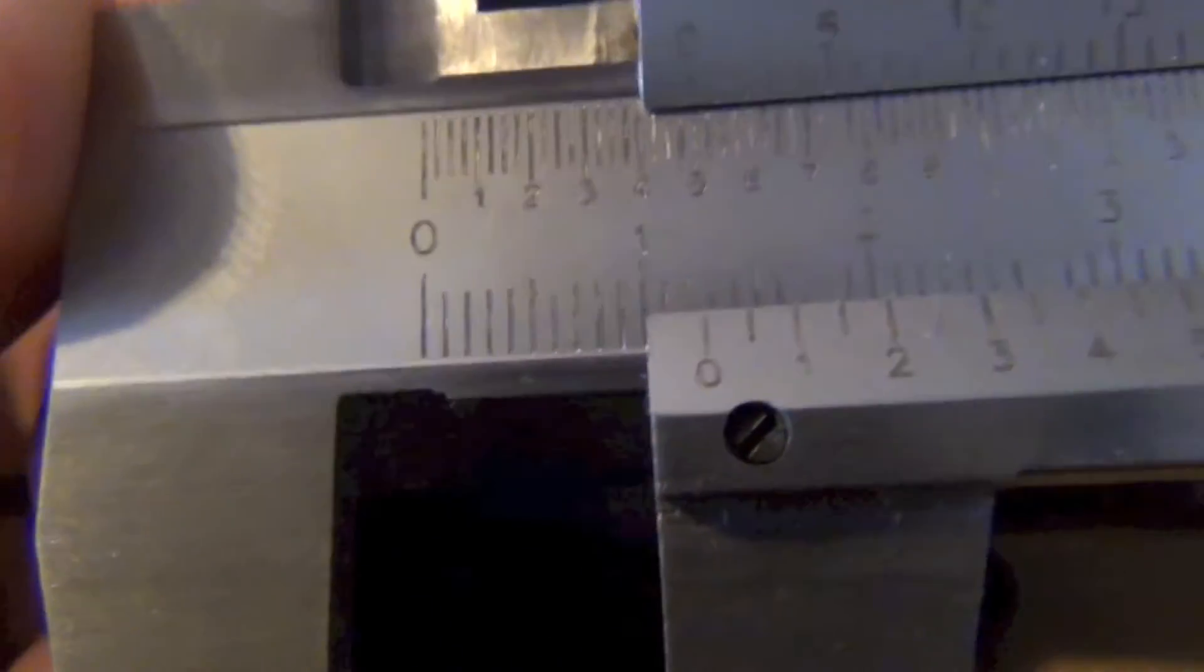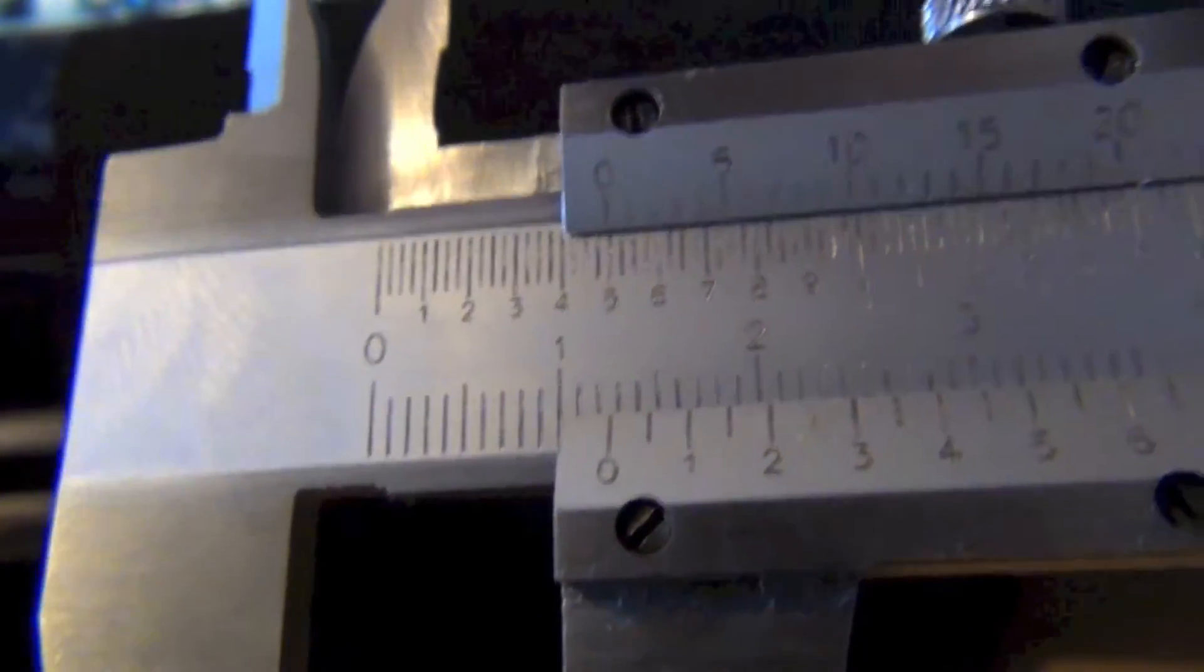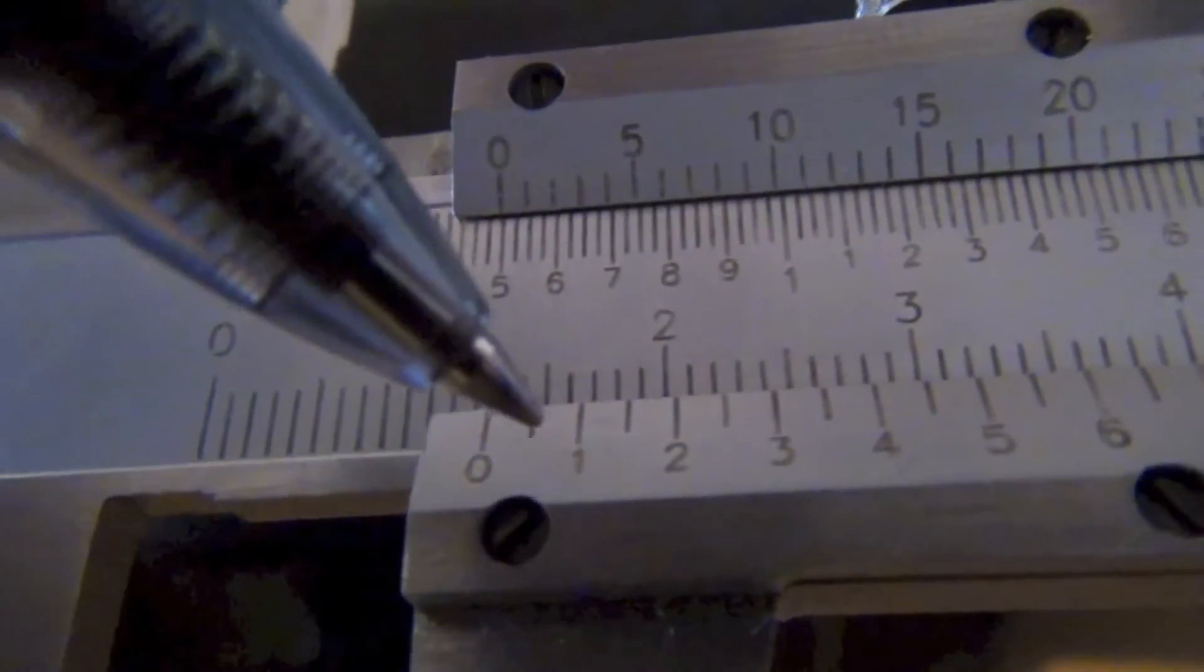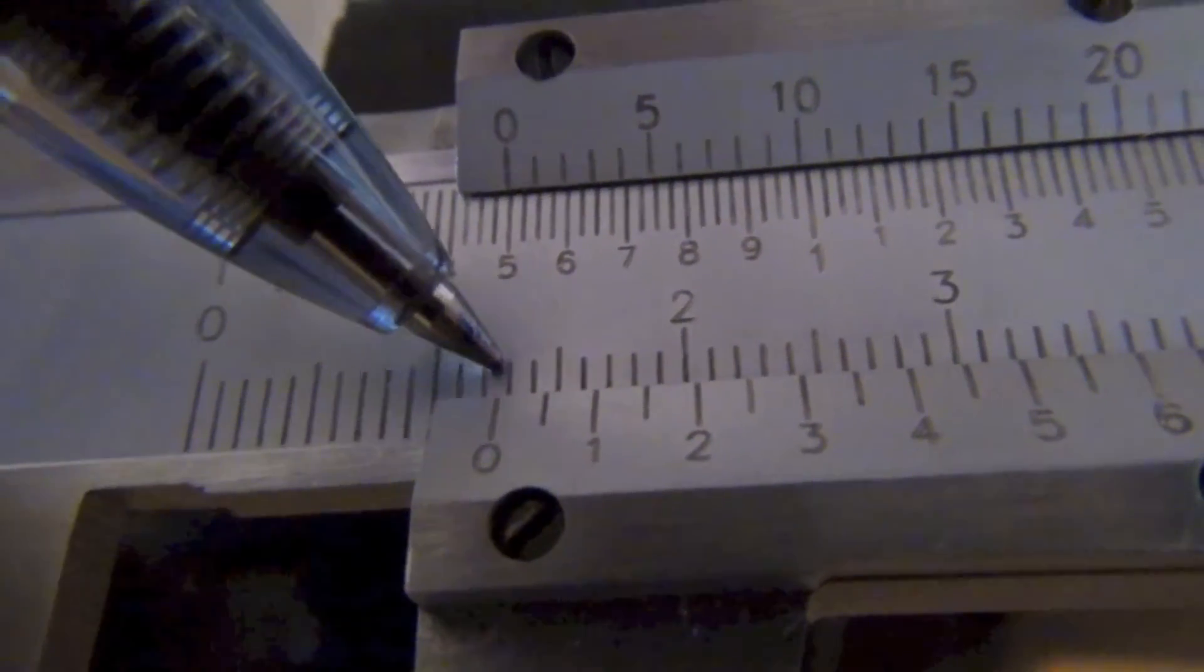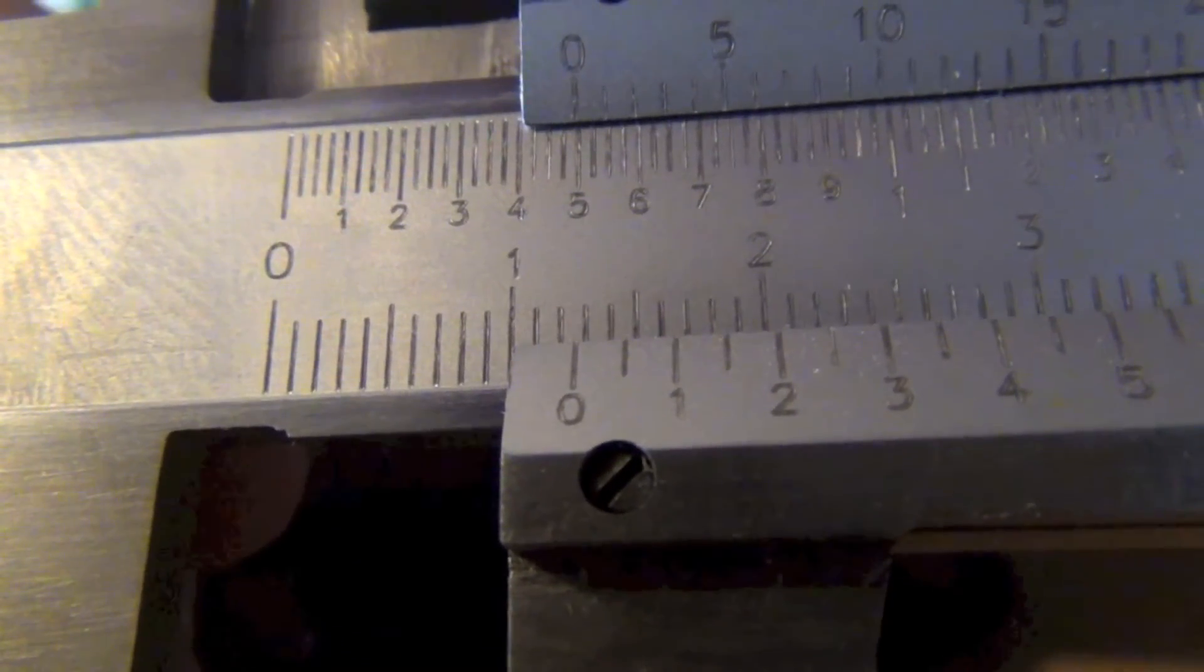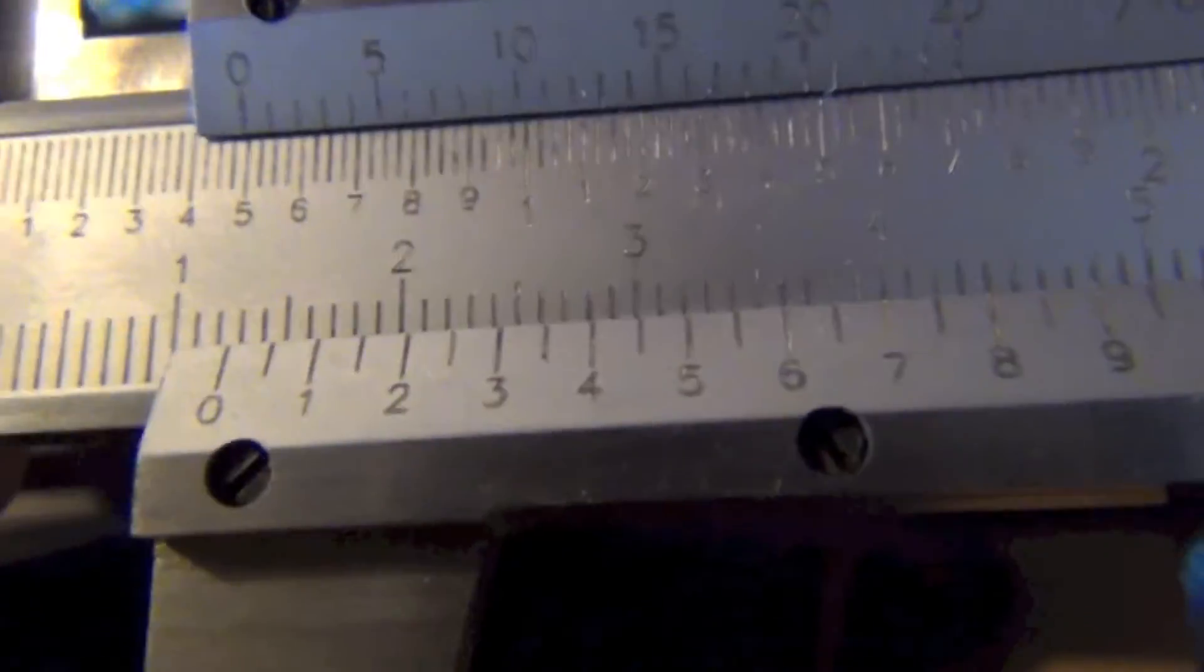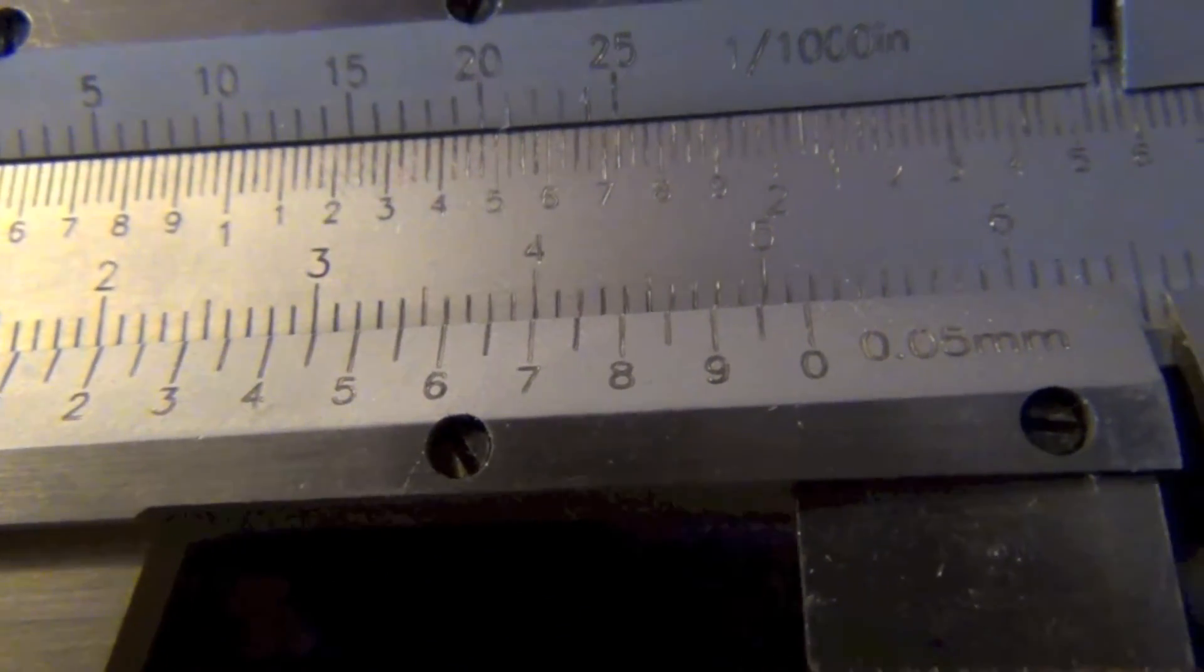This reading starts with the zero mark on the vernier scale. We find the zero point on the vernier scale right there and see that it's pointing in between these two tick marks on the major scale. The zero is pointing between the 1.2 and the 1.3 and then we simply find where on the vernier scale we see a match on the major scale.